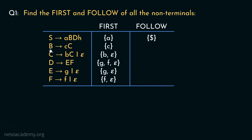Coming to B: uppercase B appears followed by non-terminal D. So to obtain Follow of B, we require First of D. First of D includes the symbols g, f, and epsilon. So in Follow of B we include g and f. Since First of D also has epsilon, if we replace D with epsilon, the non-terminal B is then followed by the terminal symbol h. Therefore in Follow of B, we will also have the symbol h.